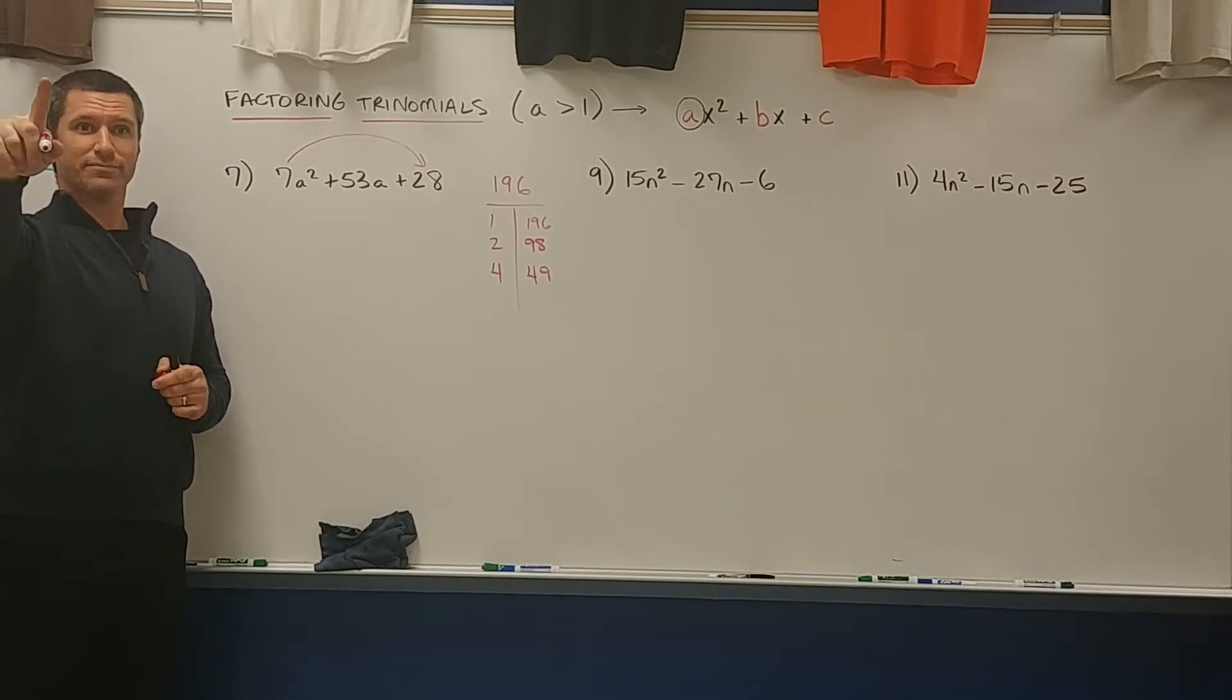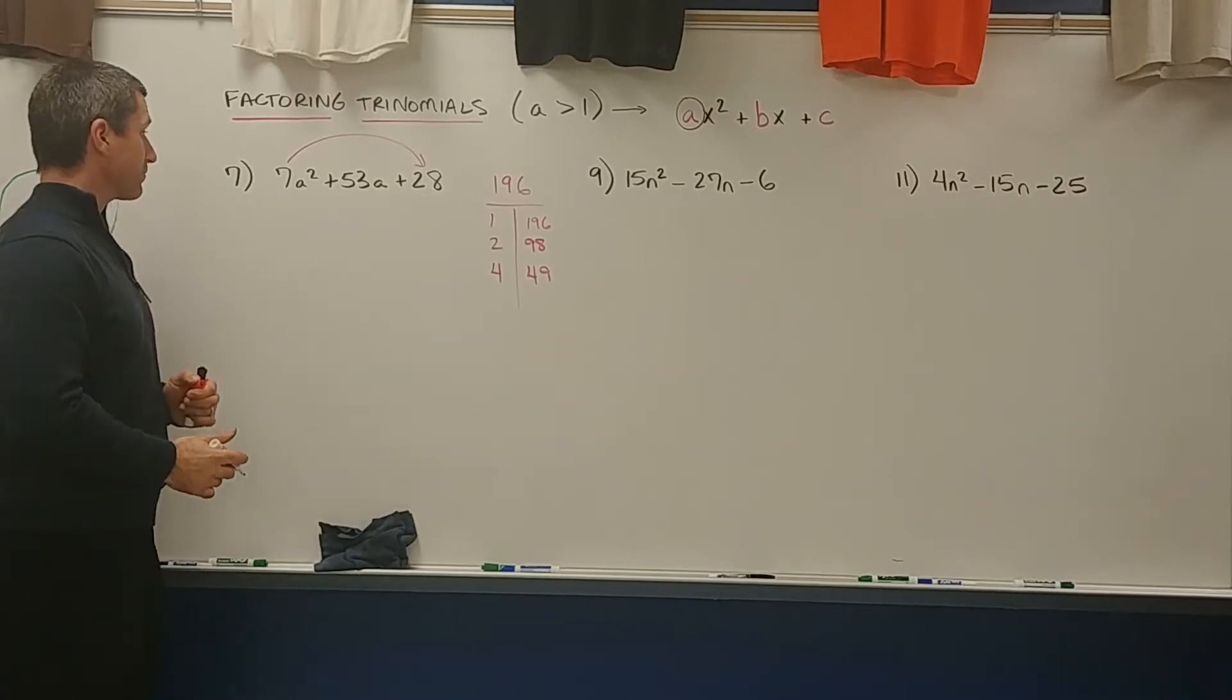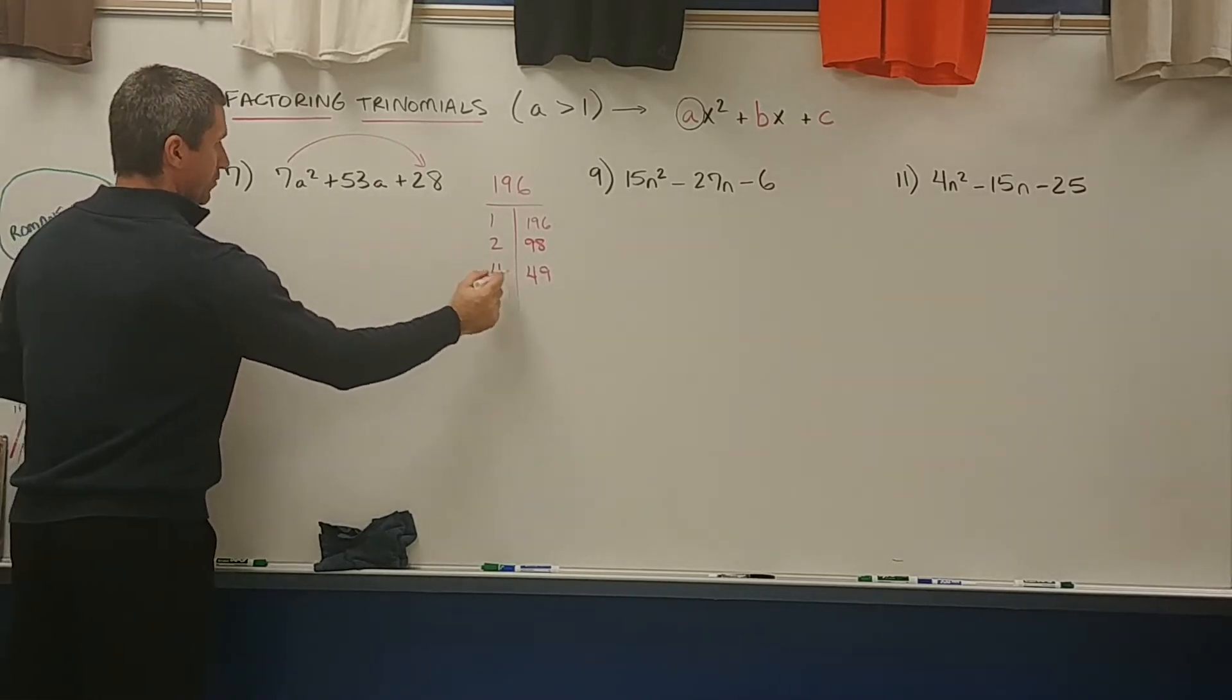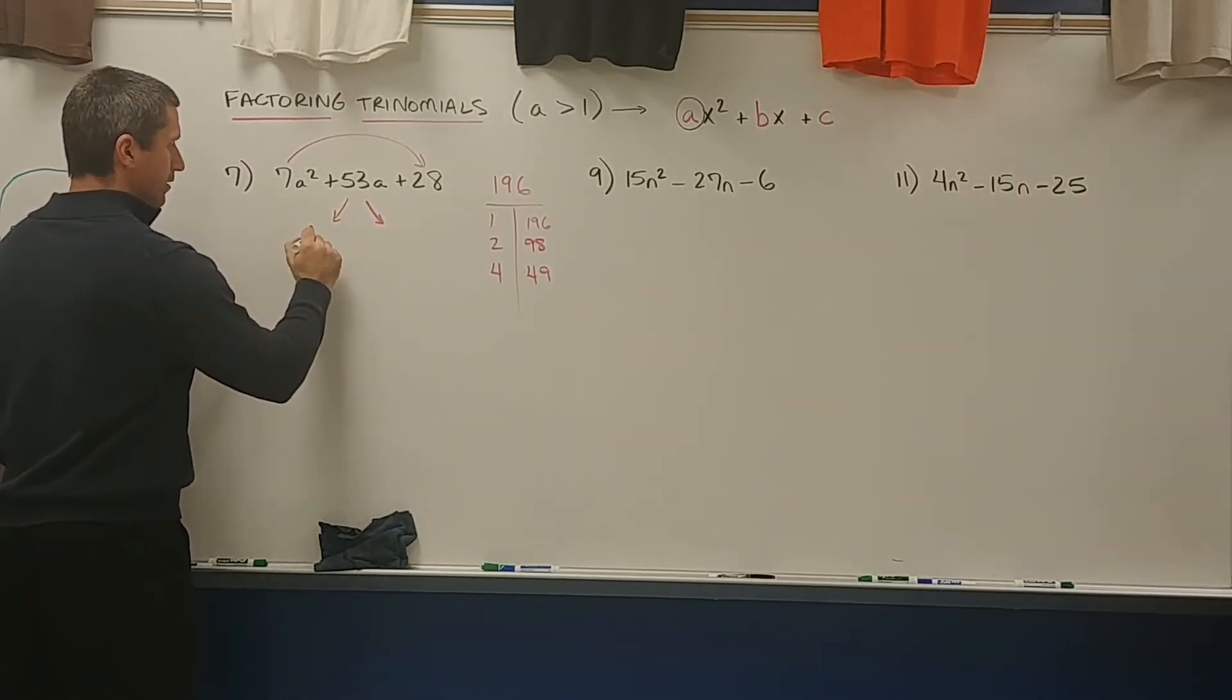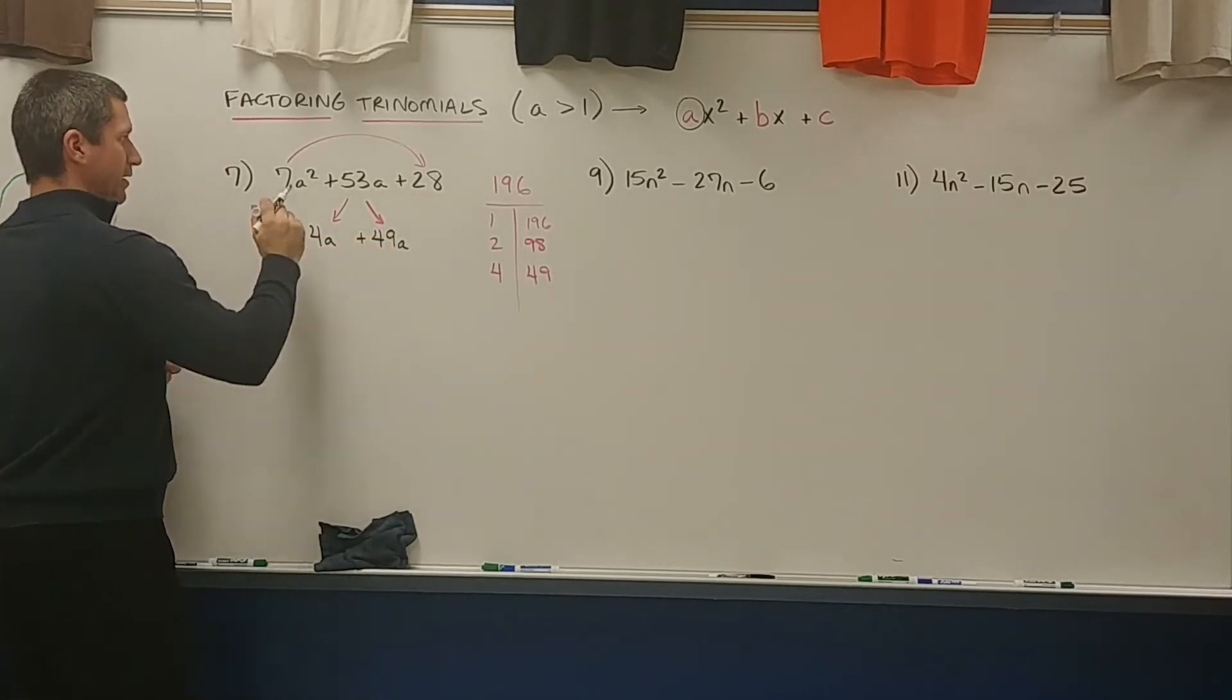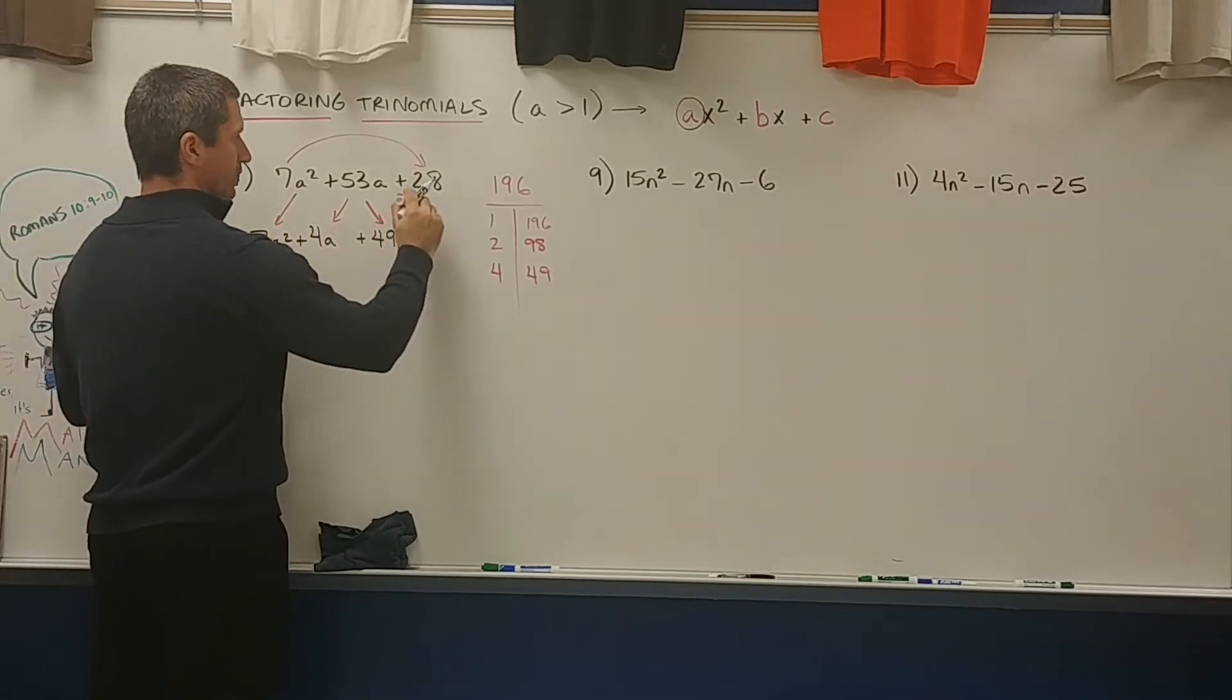4 times 49? Well, it's 4 times 50, which is 200 minus 1 minus 4. Yeah. Yeah, that works. That's if you distribute. Okay, it checks out. So we're gonna go ahead and throw those factors in right here. We're gonna split this up into those two. So we got 4a plus 49a. Bring down the 7a squared and bring down the 28.